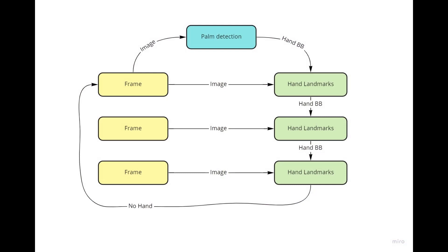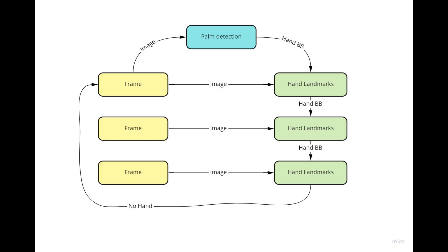First, let's analyze the general logic. The pipeline with skeletons in Mediapipe looks like this. It starts working with an initial frame, then detects the area of the hand on it. When the hand is detected, we start working with the hand bounding box. We find key points and evaluate whether the hand is present. If it is, we correct the detection area and proceed to working with the hand bounding box of the next image. If the hand is not present, we go back to the initial detection algorithm.